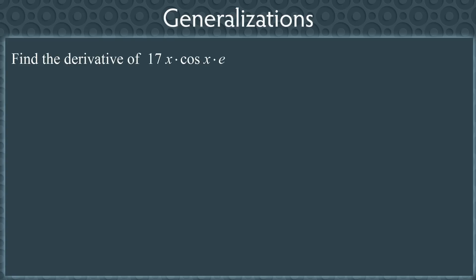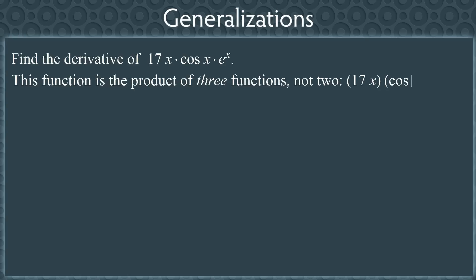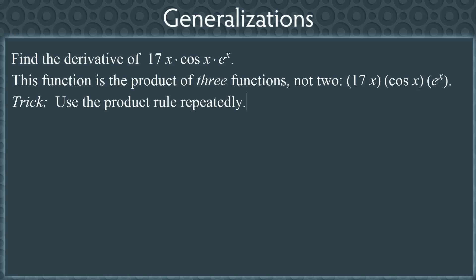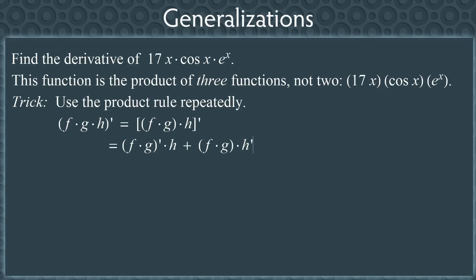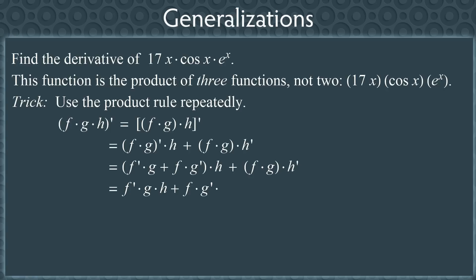Let's now see a more complex example: find the derivative of 17x times cos(x) times eˣ. This is the product of three functions, not two. But the product rule only works for two functions, so we're going to use the product rule repeatedly. To find the derivative of f times g times h, we group fg together and treat it as a single function. Applying the product rule gives d/dx[fg·h] = d/dx[fg]·h + fg·h′. Then applying the product rule again to d/dx[fg] gives f′g + fg′. Multiplying out: f′gh + fg′h + fgh′. This is the product rule for three functions.